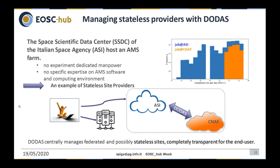An interesting final information about DODAS and providers: DODAS has the capability to manage stateless resource providers. A concrete example is the scientific data center at the Italian Space Agency hosting resources for the AMS collaboration, where there is no experiment-dedicated manpower and no specific expertise on AMS software. There is just bare metal running an operating system. What we did — now in production — is the transparent integration of these resources in DODAS fashion. We extended the official batch system pledge of AMS to include those resources, and further extended using thematic service resources from the EOSC project running at CNAF, and another stateless site at INFN. By magic, jobs started running everywhere in a completely transparent manner for the end user.